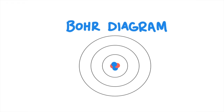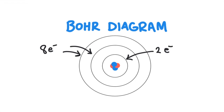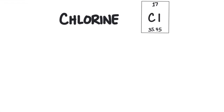The Bohr model of the atom uses rings to show where electrons are located around the nucleus and how much energy the electrons have. We have already learned that energy levels don't look like rings, but this model is still very useful because it helps us understand how many electrons can exist at a certain energy level. Each energy level can hold a certain number of electrons before it's filled up. The first energy level can hold two electrons, and each level after that can hold eight. Let's draw the Bohr diagram for chlorine.